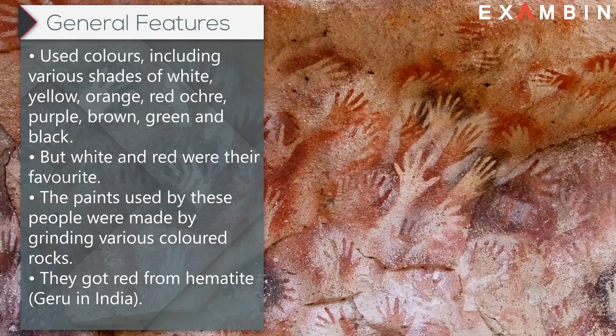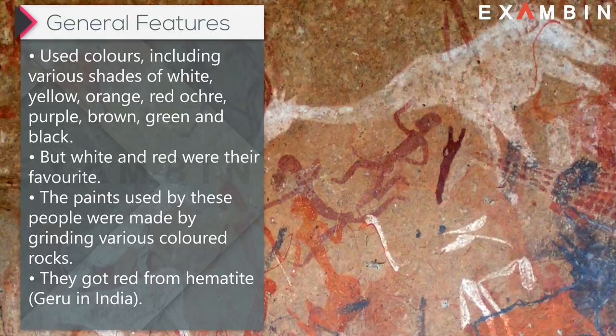Some general features of prehistoric paintings: based on the study of Bhimbetka paintings, they used colors including various shades of white, yellow, orange, red ochre, purple, brown, green, and black. But white and red were the favorites.